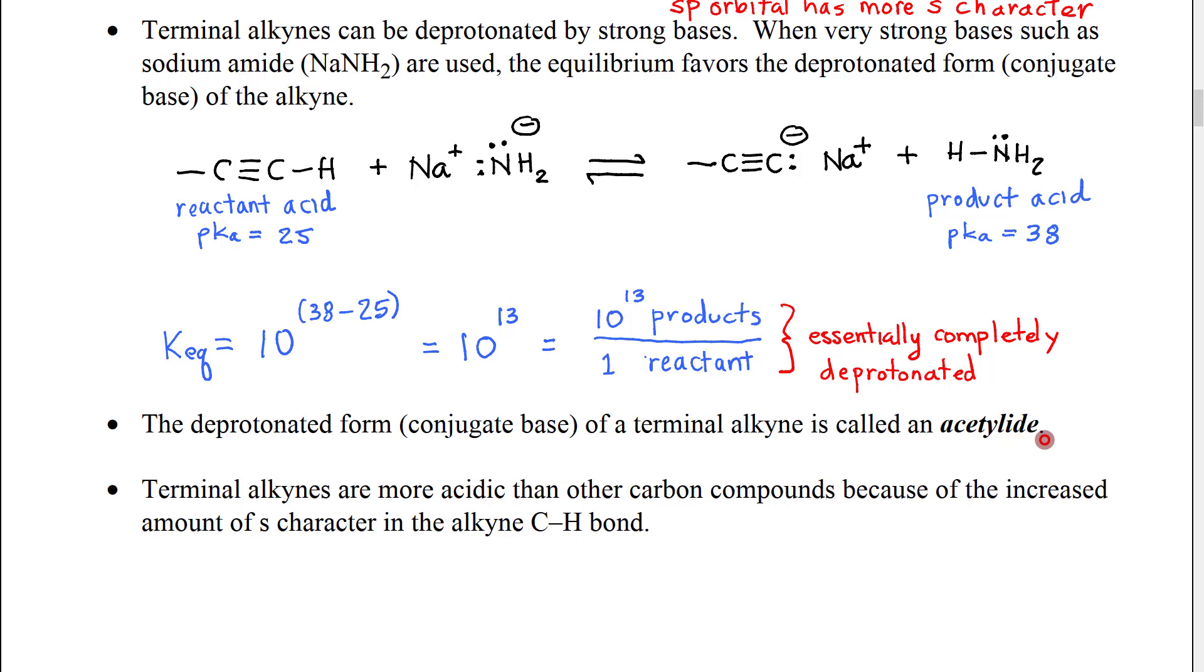but then they've replaced the ene ending with ide, which is an ending that typically denotes a negative ion. As mentioned before, terminal alkynes are more acidic than other carbon compounds because of the increased amount of s-character in the alkyne C-H bond.